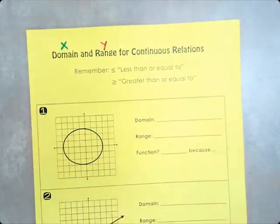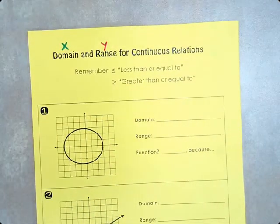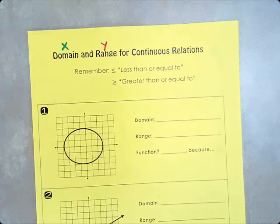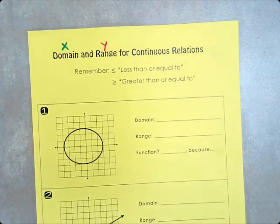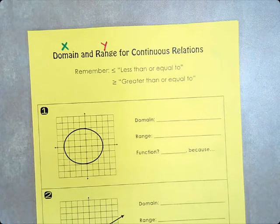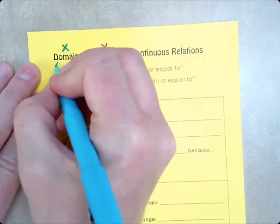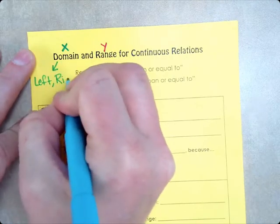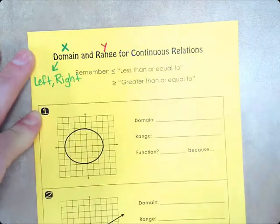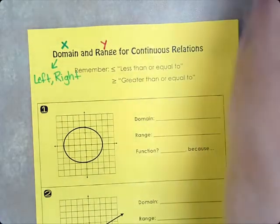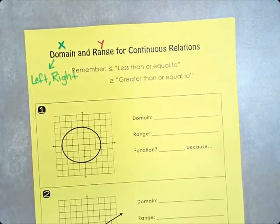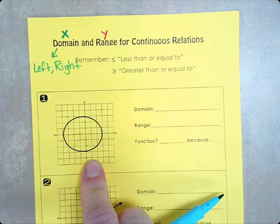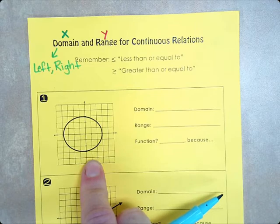So, what we are going to have to do is write an interval, like an idea of what the x's could be from left to right. How far left the function goes and how far right it goes. So, domain will be represented with left and right.